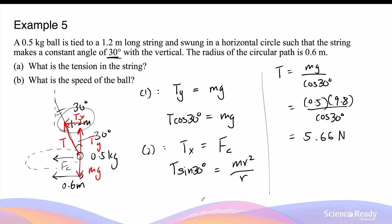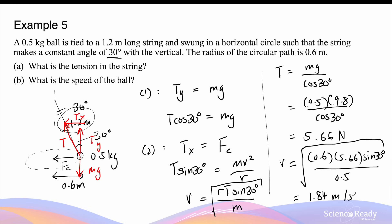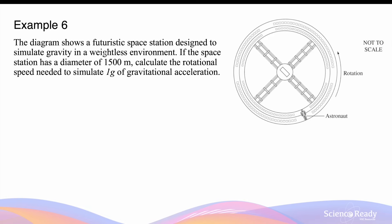Substituting the tension into the second equation, the speed of the ball is v equals the square root of (r times T sin 30° divided by m). Using r equals 0.6 meters, T equals 5.66 newtons, sin 30°, and mass 0.5 kilograms, taking the square root gives a speed of 1.84 meters per second.